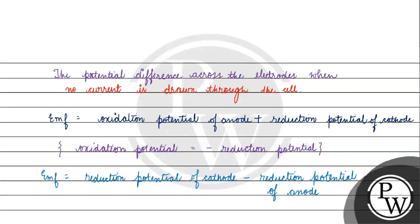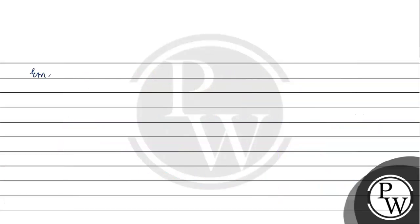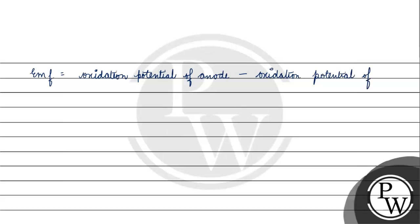When we consider the oxidation potential, if we change the sign, we get reduction potential of anode. So if EMF equals reduction potential of cathode minus reduction potential of anode, you can write another relation: EMF can also equal oxidation potential of anode minus oxidation potential of cathode.